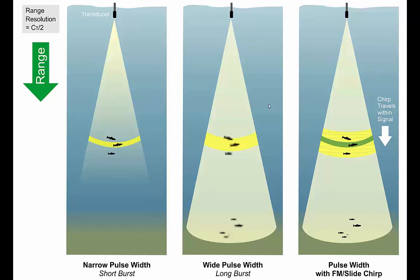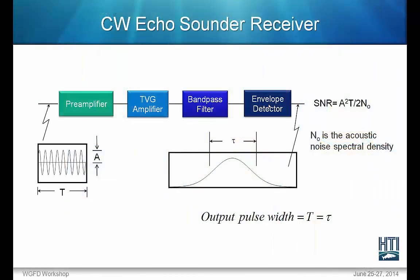Here is a typical example of how a CW system produces a pulse. The bandpass filter bandwidth BW, corresponding to the minus 3 dB spectral bandwidth for a tone burst pulse of duration capital T, is BW = 1/T. With this bandwidth, the input pulse width capital T equals the output pulse width tau — in other words, what you see is what you get. The signal-to-noise ratio is dependent on tau, not capital T, though in this case they are the same.